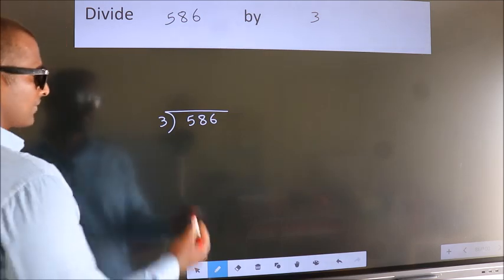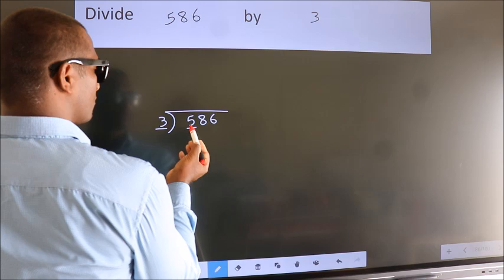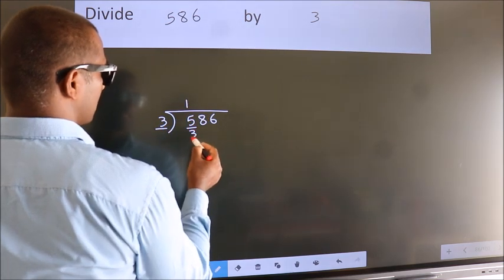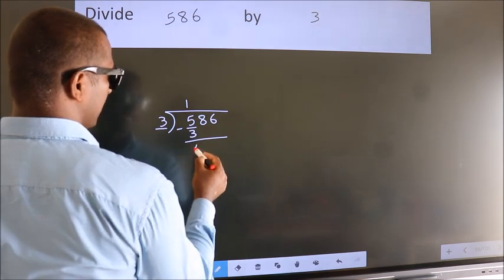Next, here we have 5, here 3. A number close to 5 in 3 table is 3 times 1, which is 3. Now we should subtract, we get 2.